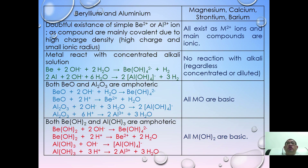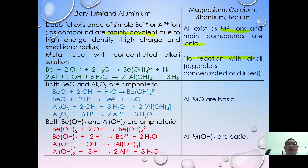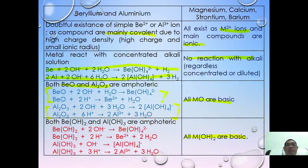In summary: both beryllium and aluminium have high charge density, making them mainly covalent, while the rest of group 2 are mainly ionic. All other group 2 compounds cannot react with alkali, but beryllium can — same as aluminium. All group 2 oxides are basic, but beryllium oxide and aluminium oxide are amphoteric. Similarly, beryllium hydroxide and aluminium hydroxide are also amphoteric.